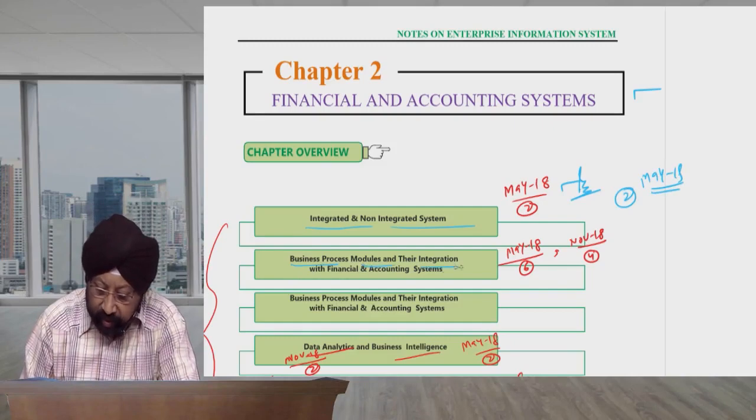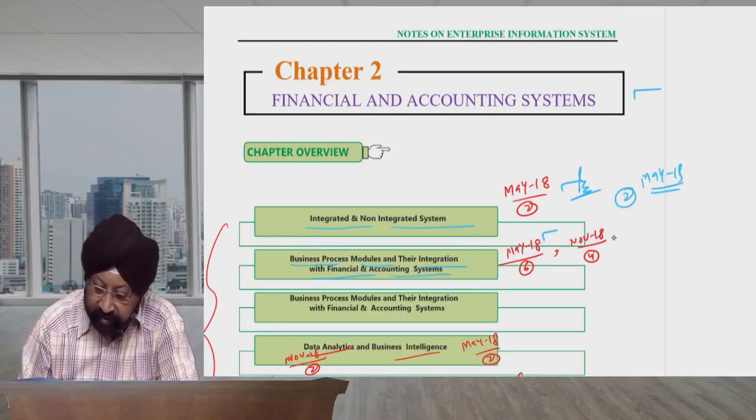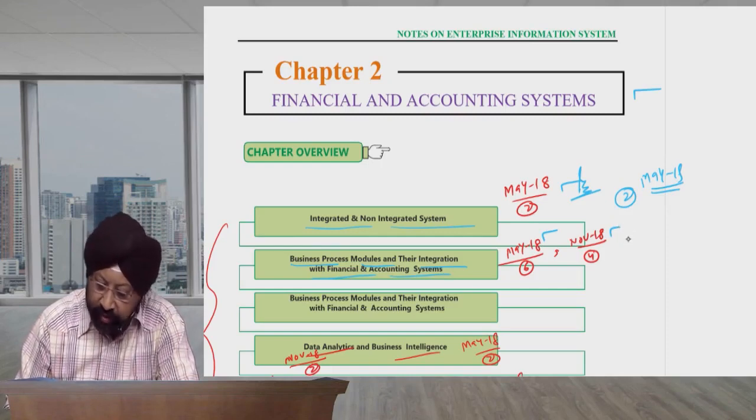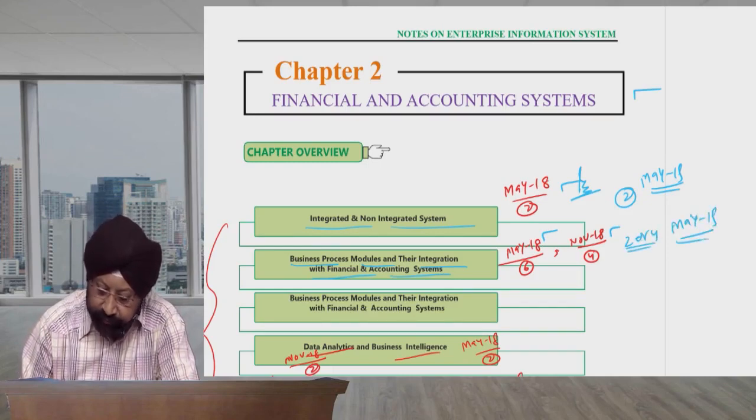Next is Business Process Module and their Integration with Financial Accounting System. May 18, 6 marks. November 18, 5 marks. So something else can be asked. This can also be 2 or 4 marks. I think most likely for May 19.